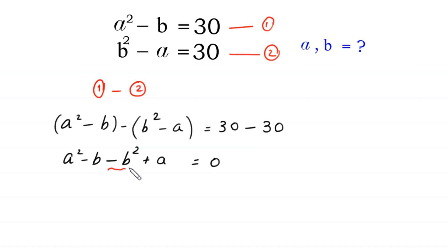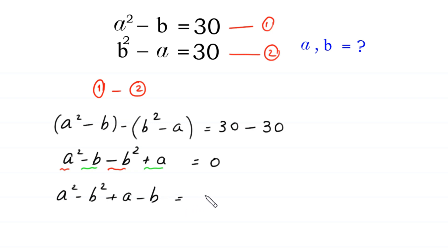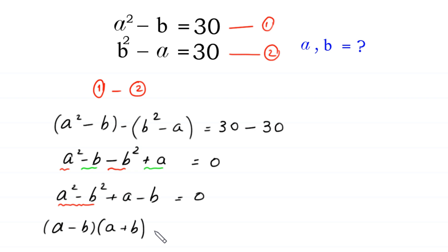We rearrange: a squared minus b squared plus a minus b equals 0. Now, a squared minus b squared factors as (a minus b)(a plus b), and from the terms plus a minus b we can factor out 1, giving (a minus b)(a plus b + 1) equals 0.